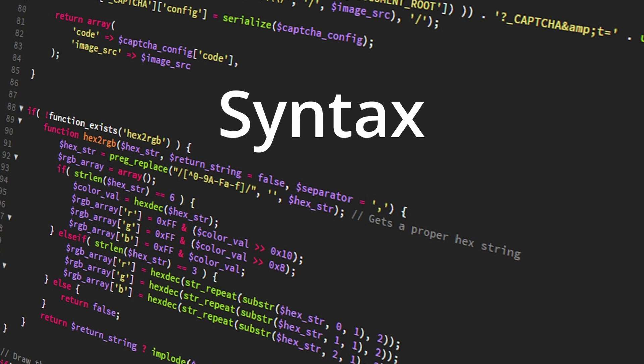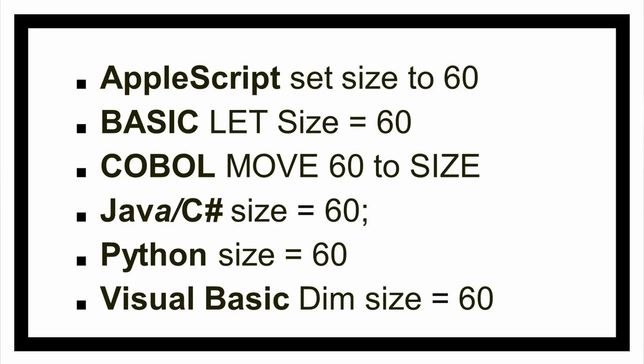Understanding the rules of a programming language is to understand that language's syntax. For example, let's take a look at the following code statements, all of which accomplish the same task in different languages: create a variable named size and assign it a value of 60. Notice the unique similarities and differences in the syntax of each of these statements — everything from the casing of the words, uppercase versus lowercase, the unique keywords that were used — set, let, move, dim, or no keyword — and the punctuation, semicolon versus no semicolon. These are all important aspects of a language's syntax.